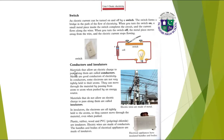Conductors and insulators: materials that allow an electric charge to pass along them are called conductors. Metals are good conductors of electricity. In conductors, some electrons are not very tightly held to their atoms and can move through the material by passing from atom to atom when pushed by an energy source. Materials that do not allow an electric charge to pass along them are called insulators. In insulators, the electrons are all tightly held to the atoms so they cannot move. Plastic, rubber, wood, and PVC (polyvinyl chloride) are insulators.